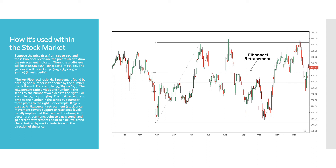Suppose you see a stock rise from $10 to $15, which is a $5 difference. If you want to use the 23.6% pullback level, you would take the high of the stock, which is $15, minus the difference from its move — which is $5 in this case — multiplied by 0.236, which is the 23.6% ratio, giving you $13.82. If you want a 50% pullback, you would do the same thing but multiply by 0.5, giving you $12.50. This is the math behind Fibonacci retracements and how you can gauge when to buy a stock.